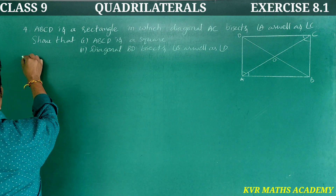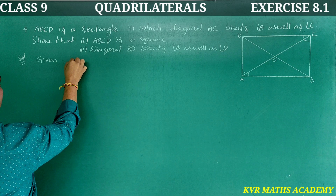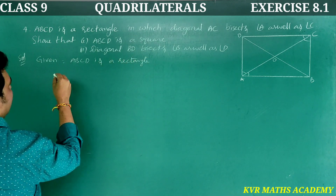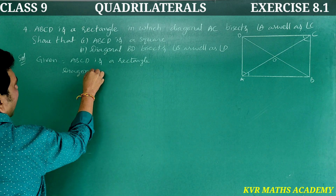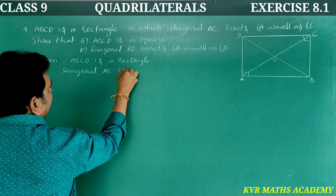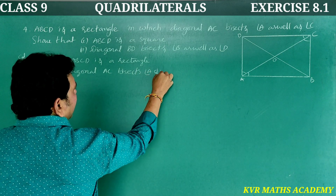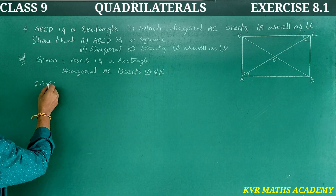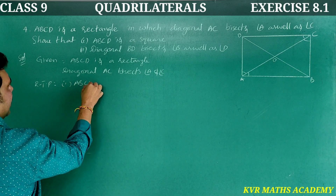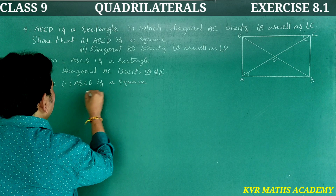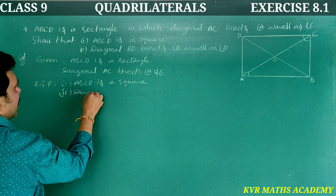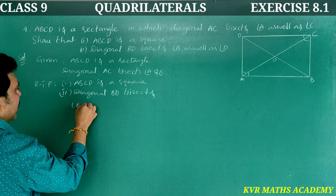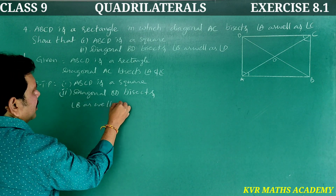Solution. Given: ABCD is a rectangle. Diagonal AC bisects angle A and angle C. What we have to prove: First, ABCD is a square. Second, diagonal BD bisects angle B as well as angle D.